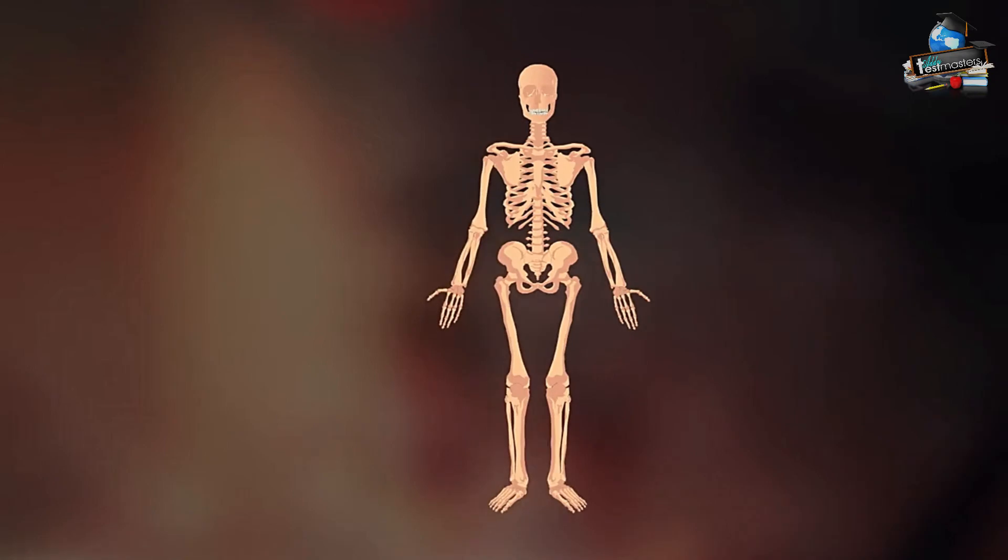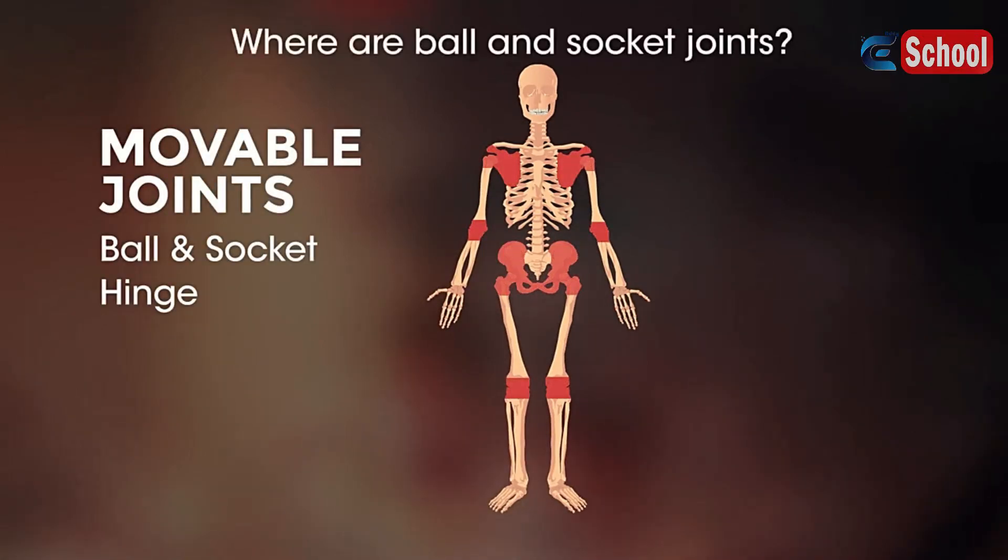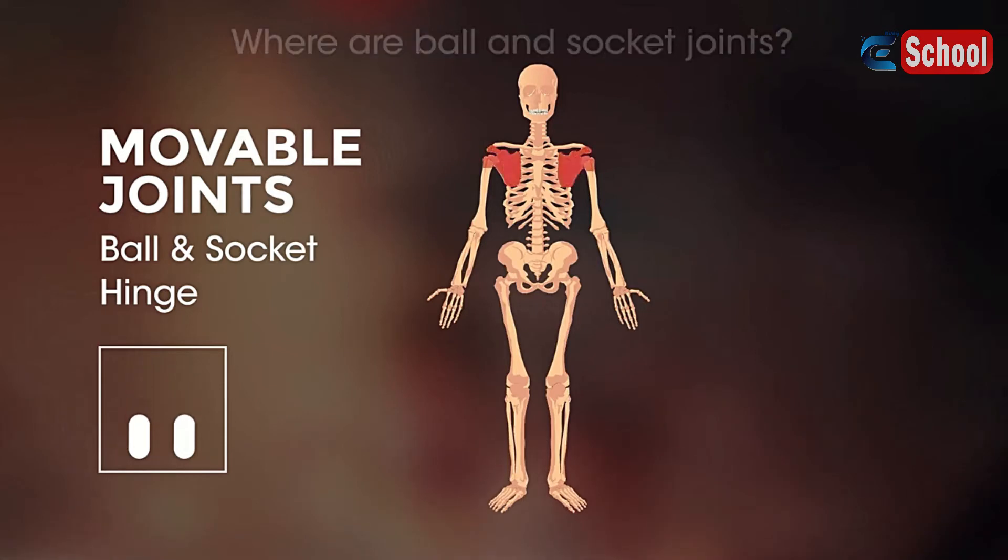So now the moveable joints. Where on our bodies do you think we have ball and socket joints? Pause the video and have a think. You probably thought shoulder, right? But did you also think of hip?